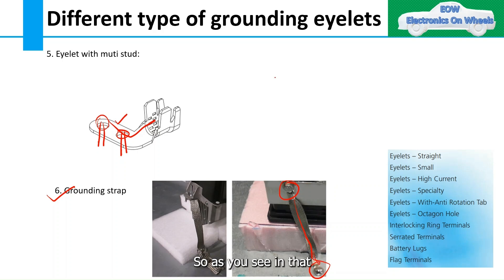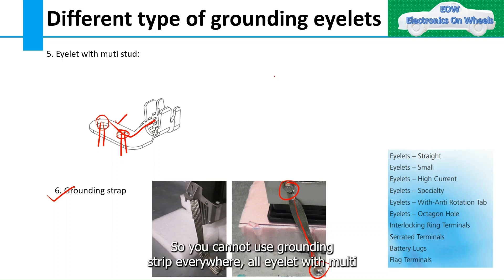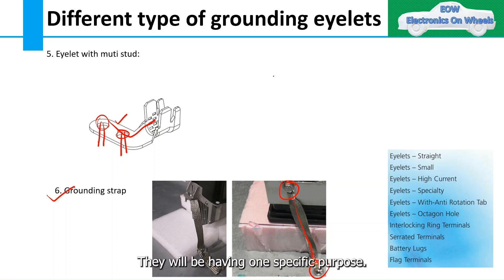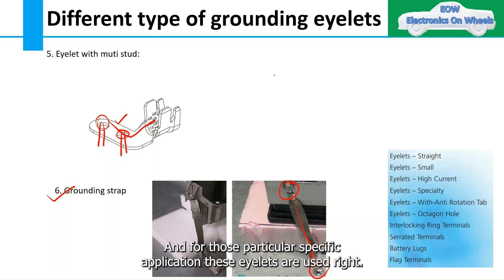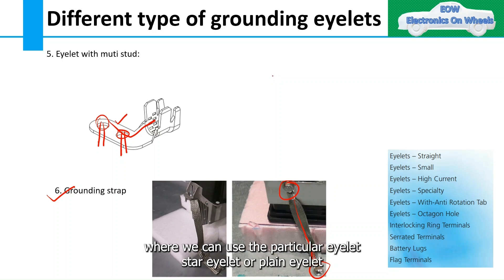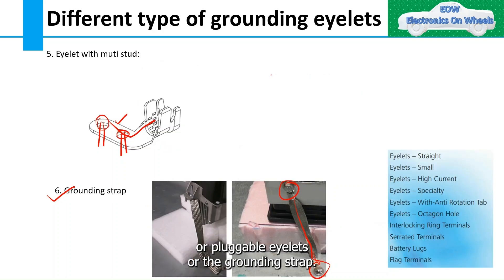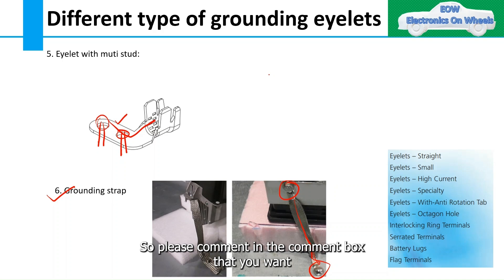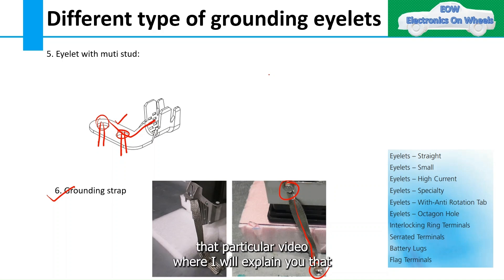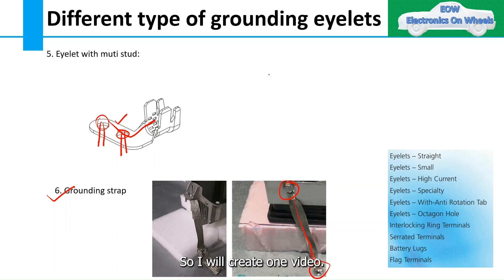As you've seen, there are many types of eyelets and each has a specific purpose. You can't use a grounding strap everywhere or an eyelet with multi-stud everywhere — they each have one specific purpose and are used for those particular applications. If you want a video explaining where to use each particular eyelet — star eyelet, plain eyelet, pluggable eyelet, or grounding strap — please comment in the comment box.